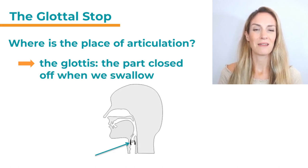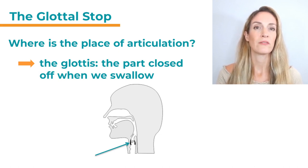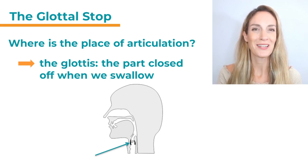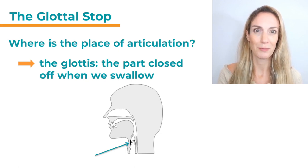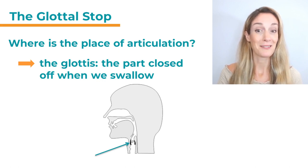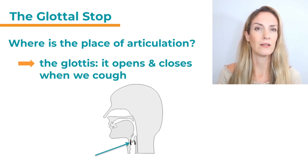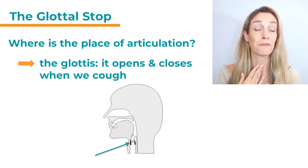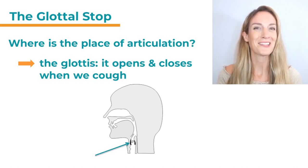The glottis closes off when we swallow, which protects you from liquid or food dropping down your air pipe. So if you just swallow, you can actually feel something closing off here. The glottis also opens and closes when we cough. If you just make that cough sound quickly, you can feel how it opens and closes. Try it out yourself.